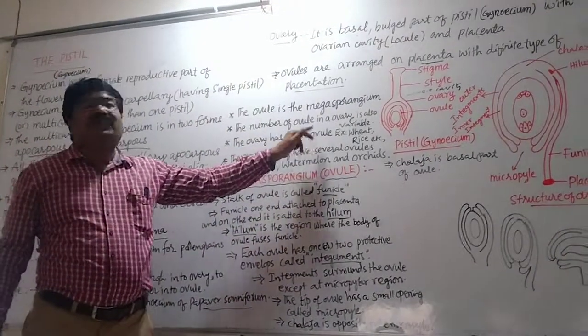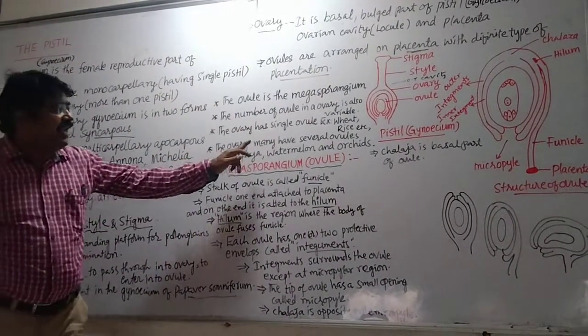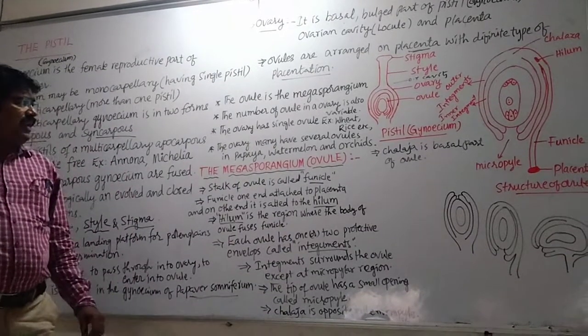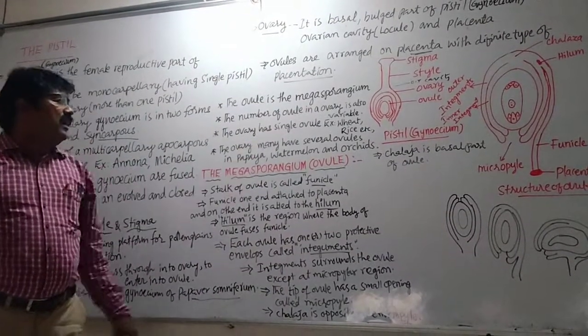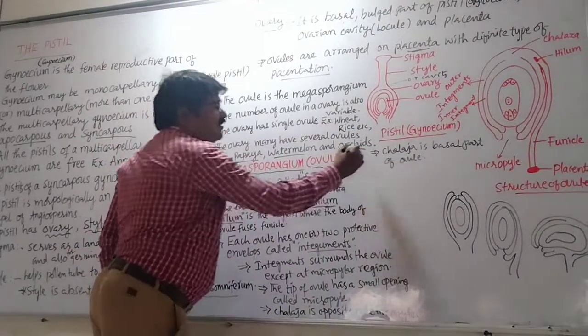The ovary may have one or many ovules. Many have several ovules, like pepper, papaya, Ranunculus, and Arachis.